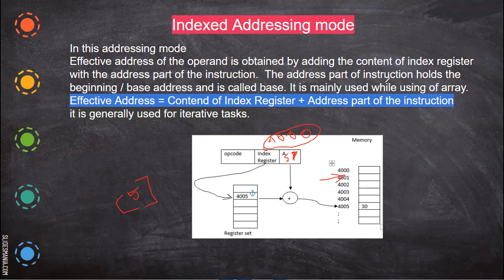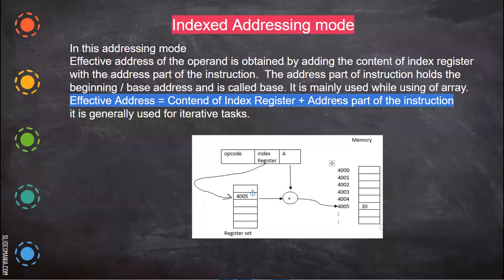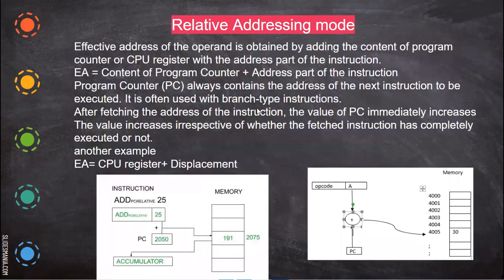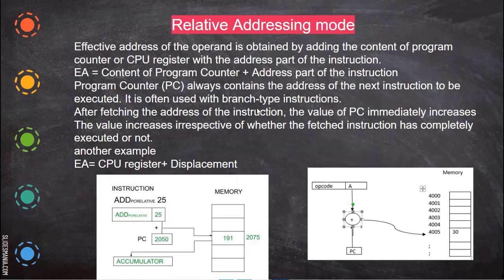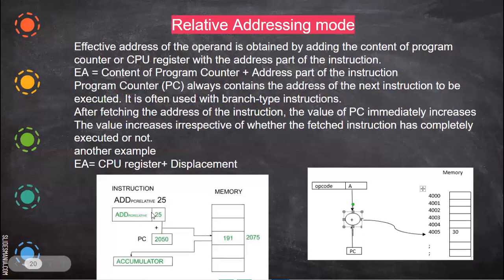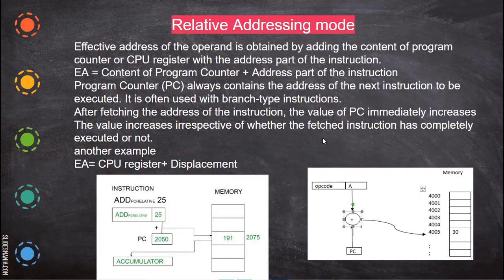The previous one, this relative addressing mode, it is not used explicitly. It is used by the microprocessor implicitly while it is executing the program, depending upon the instructions in that particular program. It will take the decision whether it has to, based on any conditional jump or something like that, it will move to that. So that program counter value will be added with the address part and then it will move to the respective location depending upon the instructions in the program.